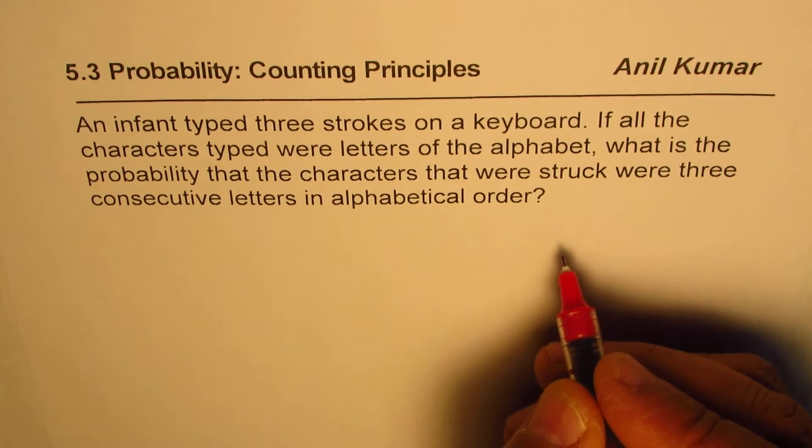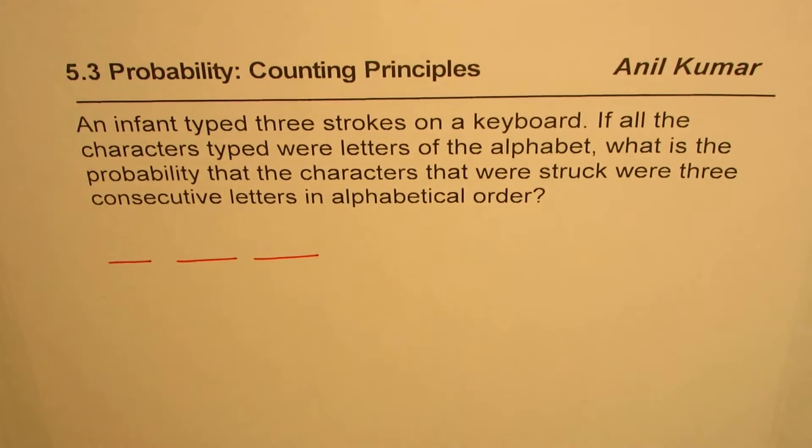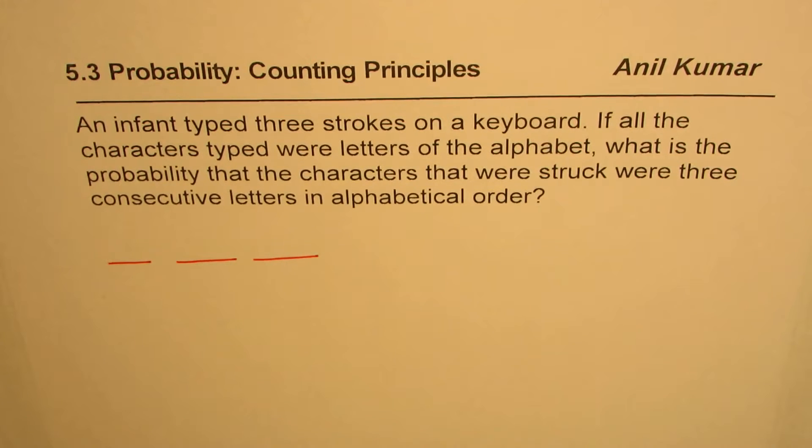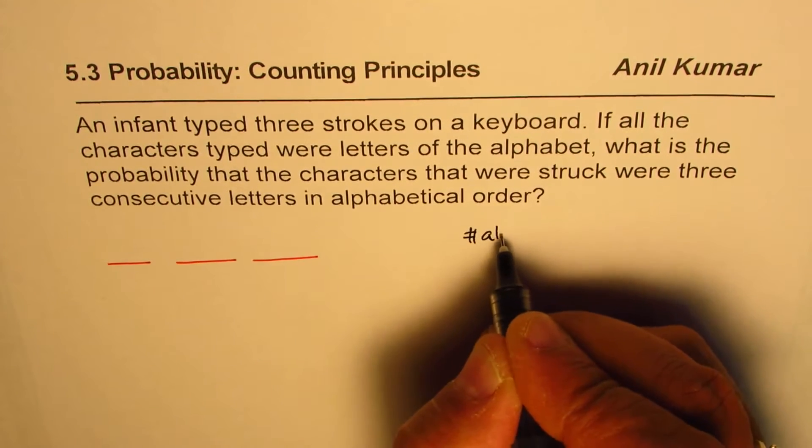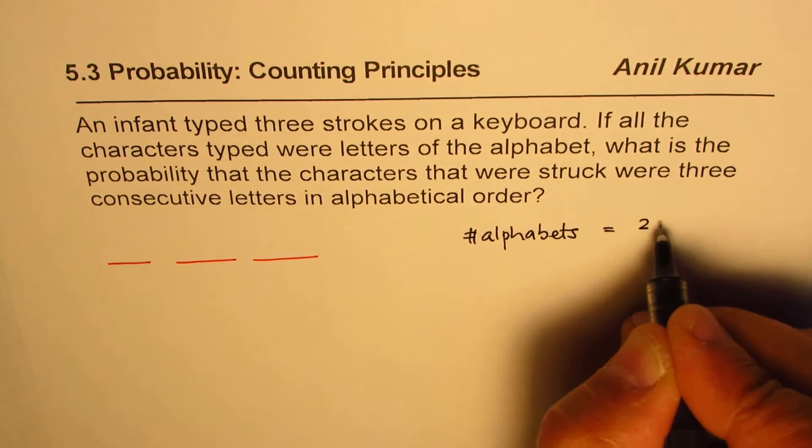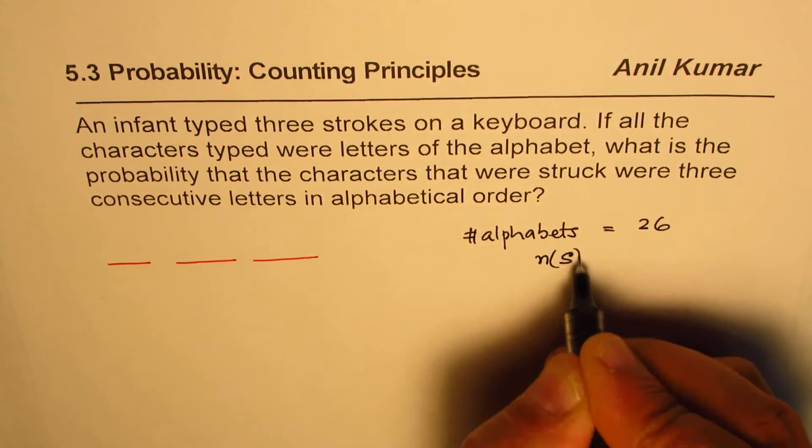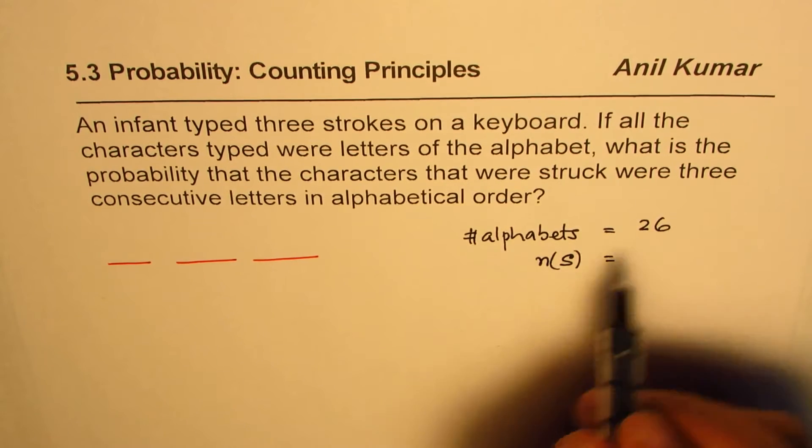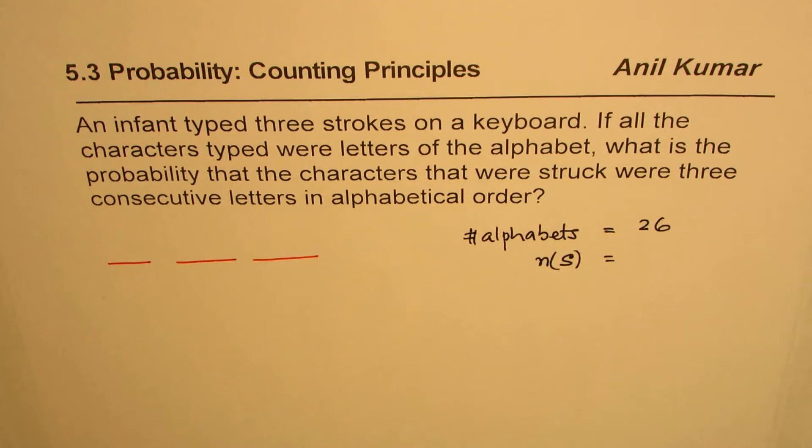So what we have here is that an infant typed three characters, and these are all alphabets. Alphabets are basically 26 alphabets. So what that means in the sample space, we have how many, what is the combination? Let's figure it out.